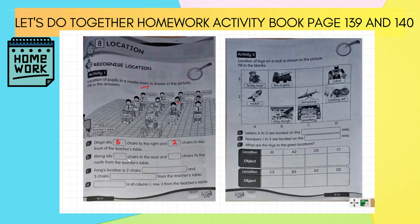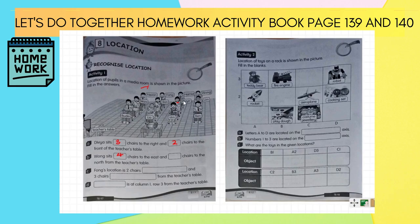Question B: Wong sits what number of seats to the east, and what number of seats to the north from the teacher's table. North, south, east, west. We find where Wong is. Counting to the east: 1, 2, 3, 4 — so 4 seats to the east. Counting to the north from the teacher's table: 1, 2, 3 — so 3 seats to the north.